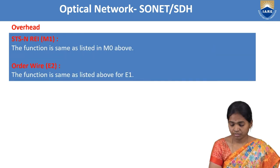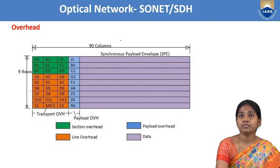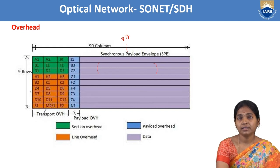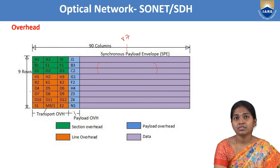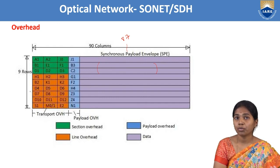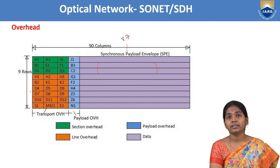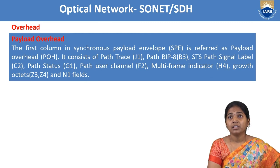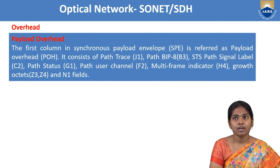In the frame structure of 90 columns, 87 columns are used for SPE (Synchronous Payload Envelope) and the remaining 3 for transport overhead. The frame is transmitted from left to right and top to bottom, starting with A1, A2. The payload overhead is in the first column of the SPE and consists of path trace J1 and path BIP-8 B3.